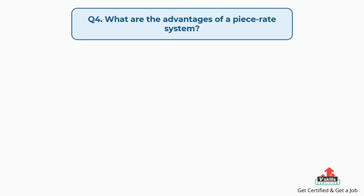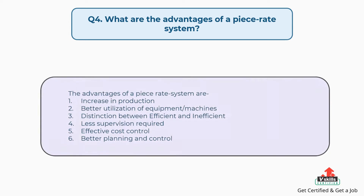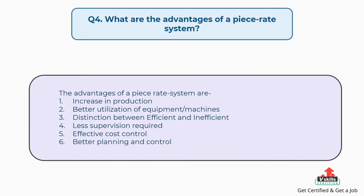Question number four: What are the advantages of a piece rate system? The answer is, the advantages of a piece rate system are: increase in production, better utilization of equipment or machines, the distinction between efficient and inefficient, less supervision required, effective cost control, and better planning and control.